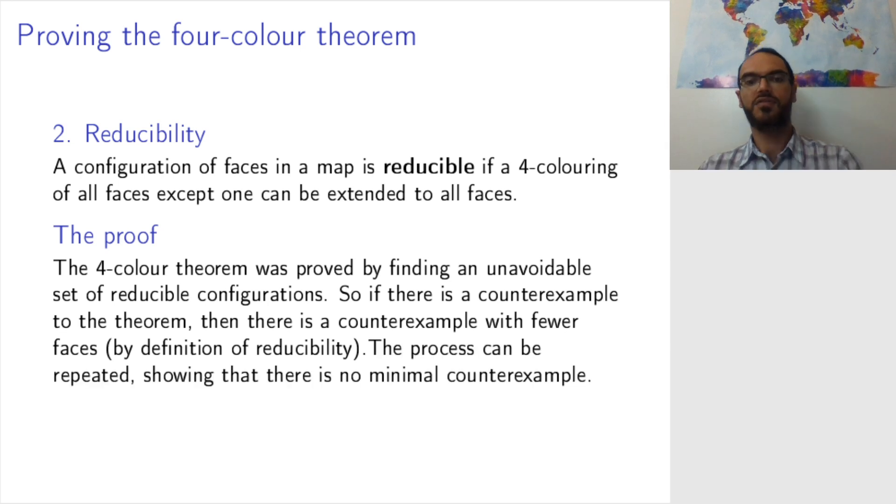So in other words, I can repeat the process so that whichever counterexample you give me, I can give you a smaller counterexample. And this is a contradiction because then there is no minimal counterexample. I end up with zero faces and that's not going to happen. So there's a contradiction.